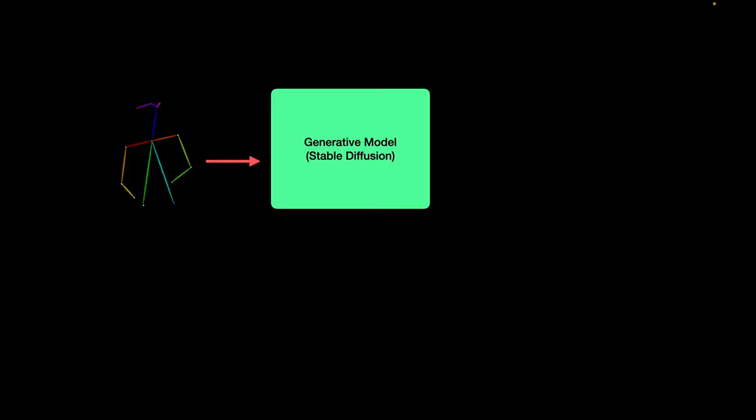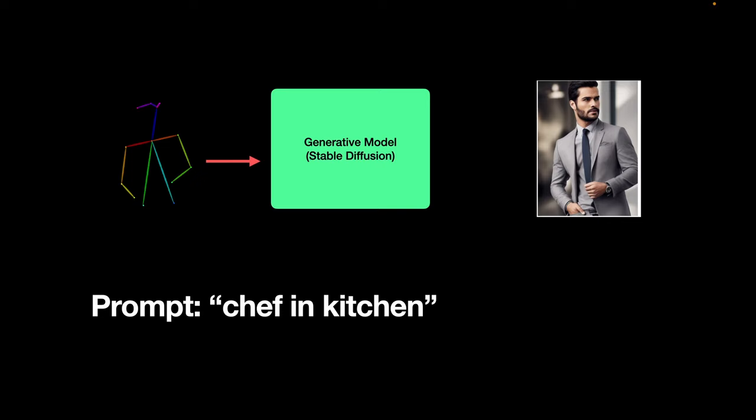Text inputs are quite limited in their ability to control the output. For example, if I want to generate an image of a man standing in this pose, I cannot imagine how many words we need to explain or define this pose. But if we can simply feed this pose directly to the model, then it makes our job much easier. And if we can feed a text prompt along with this pose, then we have even better control, and we can generate the image of, say, a chef standing in the same pose.